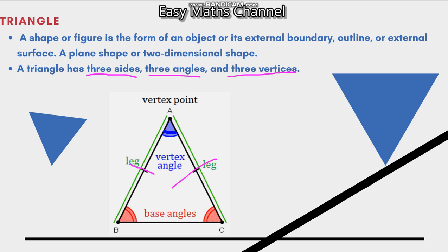This is a leg, this is a side — let's say a leg. This is a base; usually this is a leg. B, C — this is a vertex point. Let's say two lines meet at a point. This is a triangle. This is a vertex point. Is it clear to you? Yes. Let's say types.